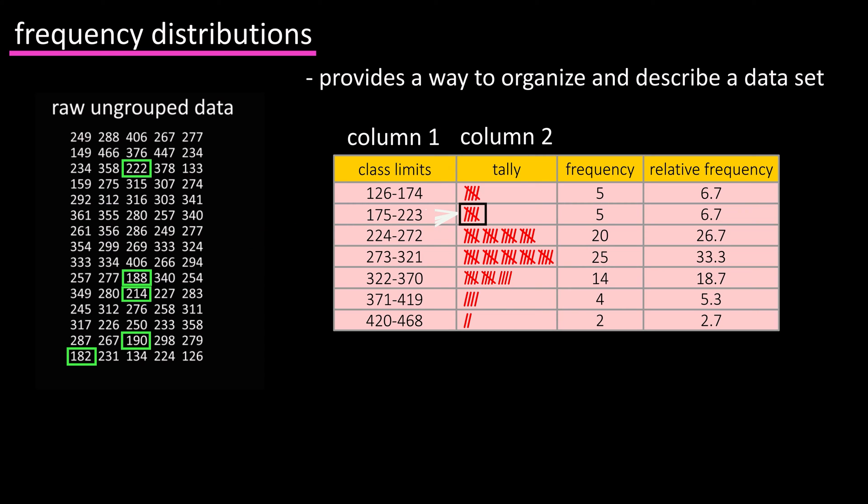Column 2 shows a handwritten tally for each of the data points in each of the classes. For example, there are 5 data points that lie between 175 and 223.